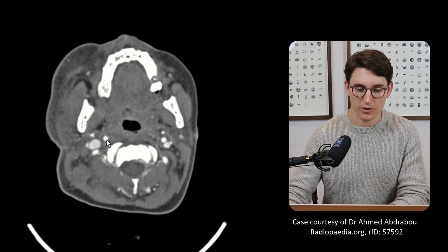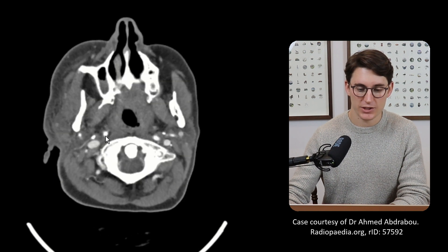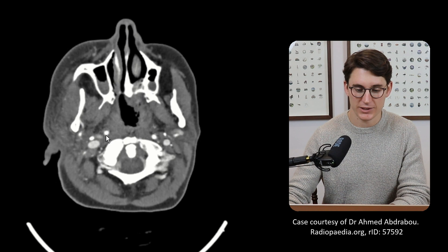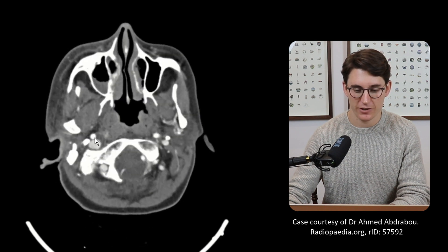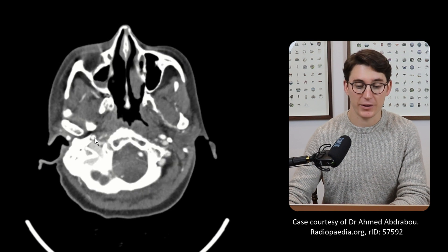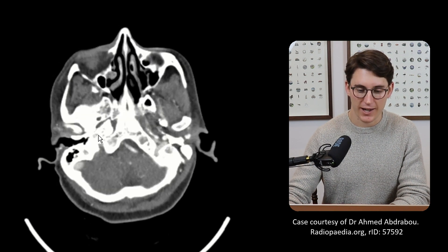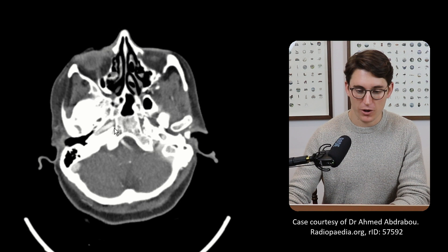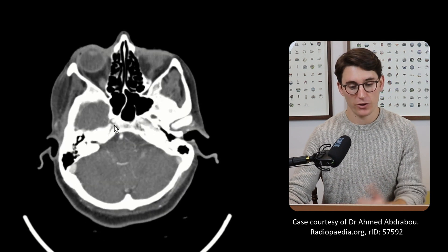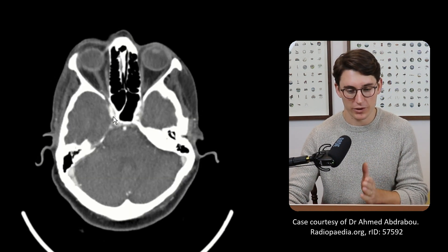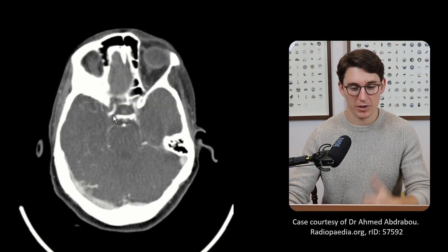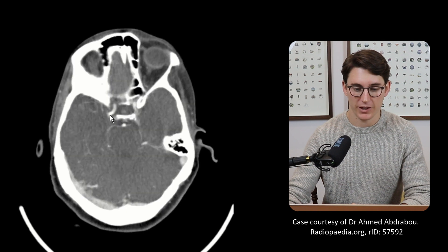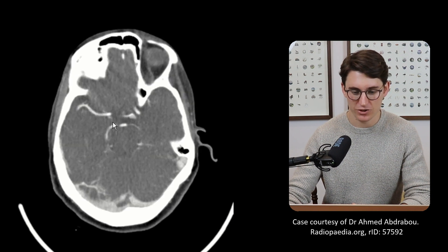We follow that internal carotid artery upwards. We can see our two vertebral arteries here, and our common carotid coming towards the skull base. Up into the carotid canal, anteromedially, past the foramen lacerum. We come further upwards and then dive forward, past or through the cavernous sinus, up past the anterior clinoids, coming backwards, splitting into our middle and anterior cerebral arteries. And we can just see our posterior communicating artery there.